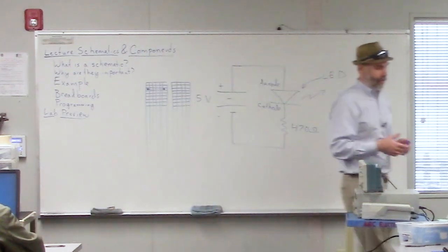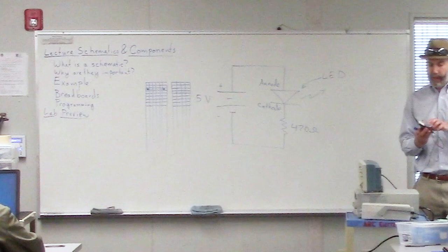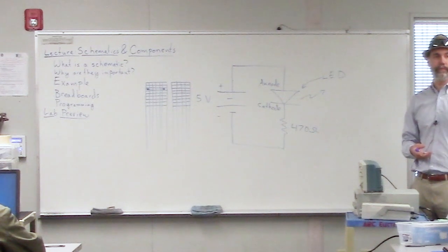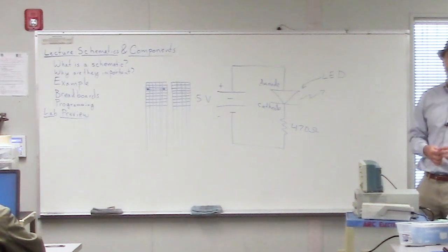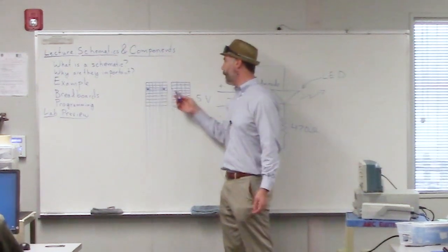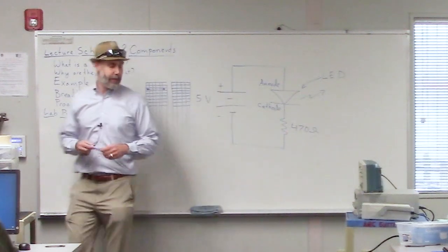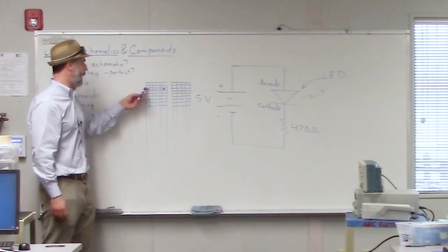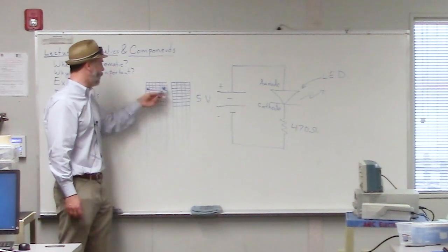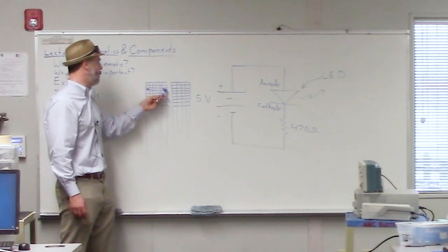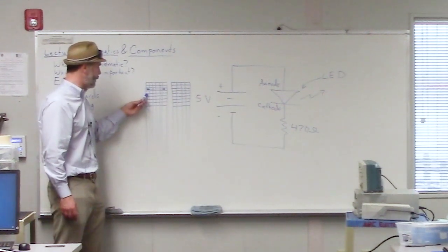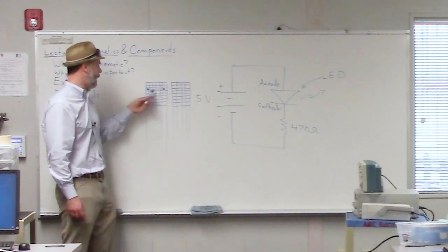We can use breadboards to quickly make connections, build circuits, and try stuff out. Any questions? — Is one side negative and the other positive? Not necessarily — it depends on what you plug in. You could plug the negative side of a battery into a hole in one row and everything else in that row would be connected to negative. Then you could plug the positive side into the next row down and that whole row would be positive.